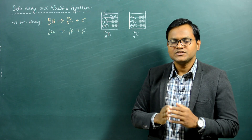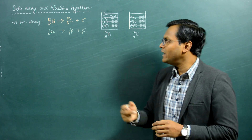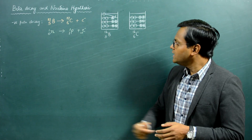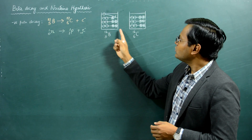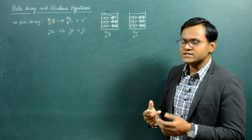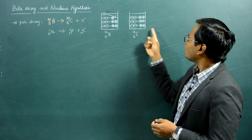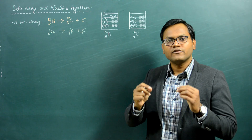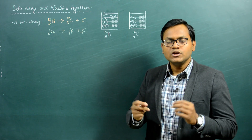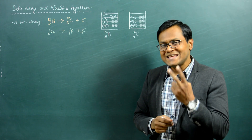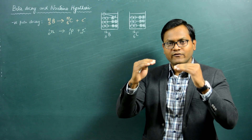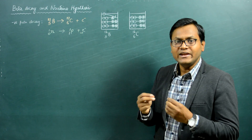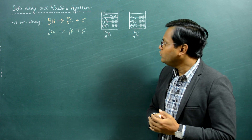We can understand why such a decay happens by looking at the nuclear energy configuration of both these nuclei. In boron-12 you have five protons and seven neutrons, while in carbon-12 you have six protons and six neutrons. Because neutrons and protons are fermions, no more than two of the same kind of fermion can occupy a given energy level, so we end up with this kind of energy level diagram for both nuclei.